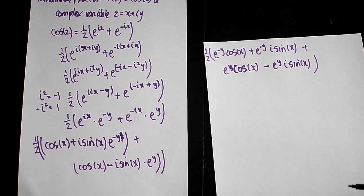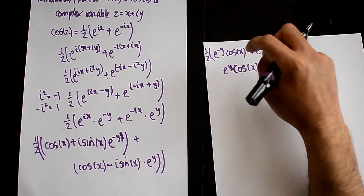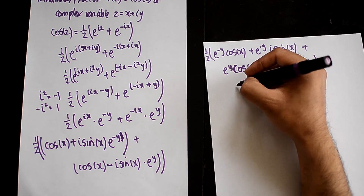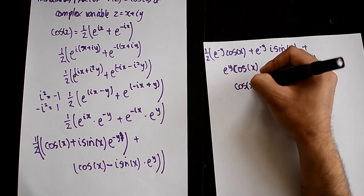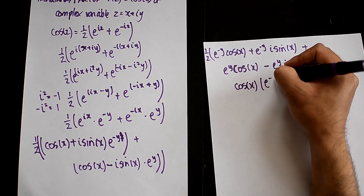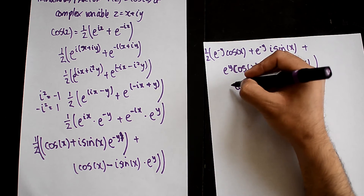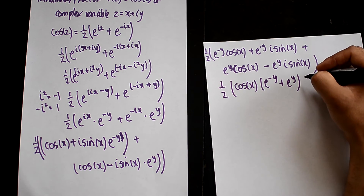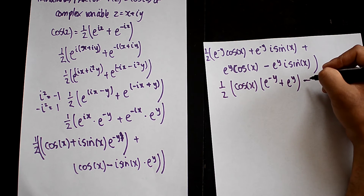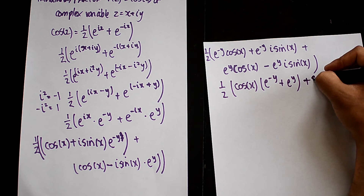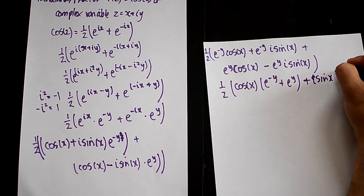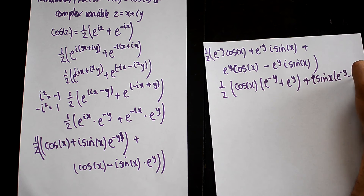Now I want to collect all the cos terms and sin terms together. So the cos x terms give e^(-y) plus e^(y), and the i sin x terms give e^(-y) minus e^(y).